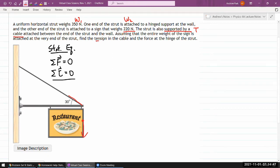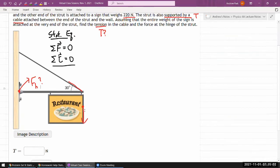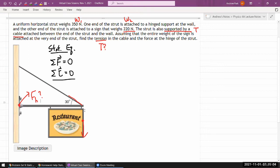Assuming that the entire weight of the sign is attached at the very end of the strut. So it's not a uniform sign, it's a sign attached at the end. It might be a good engineering practice because if the whole thing is built to withstand this, it will withstand when the sign is uniform. So it's the worst case scenario. Find the tension in the cable and the force of the hinge at the strut. It looks like it's asking for the magnitude of those forces, so I'll work it out that way.